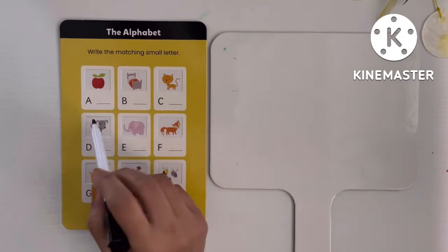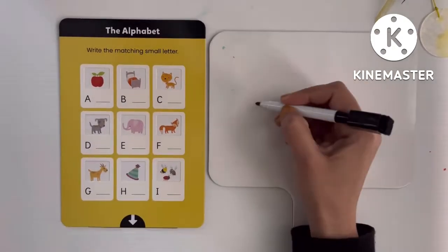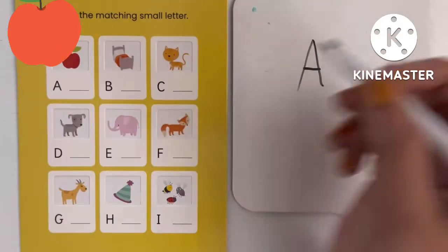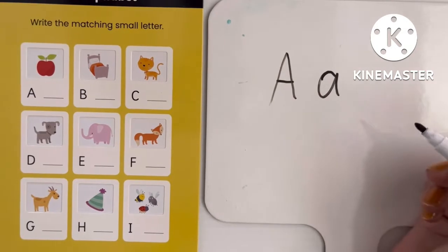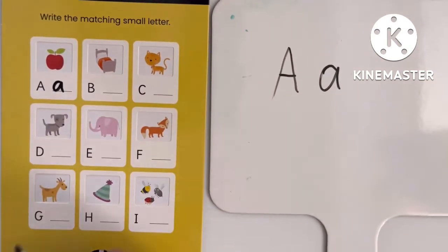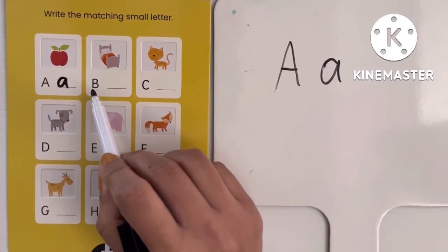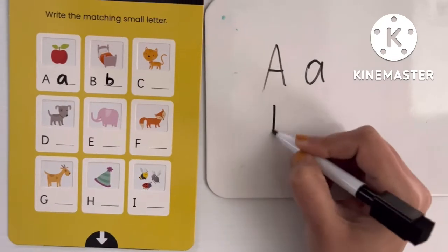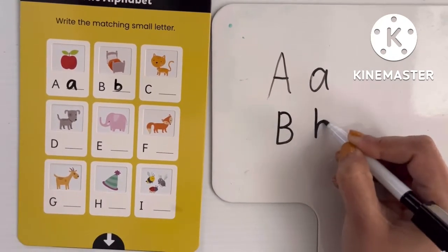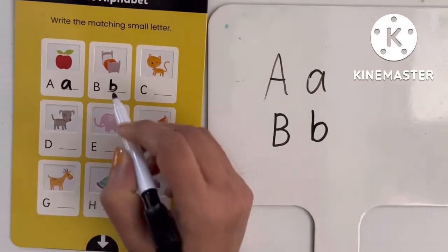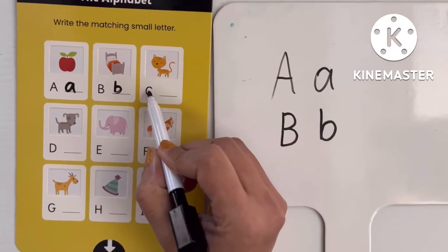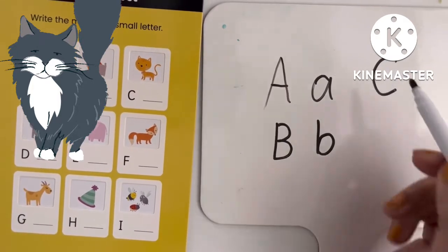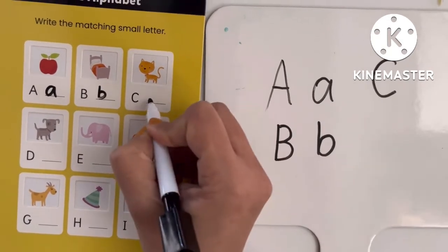Our first letter is A. This is capital A — A for apple. In lowercase it will be like this: a. Our next letter is B. In capital letter it will be like this: B. And lowercase is like this: b — b for bed. Next, C — C for cat. This is the capital letter in uppercase. In lowercase we write: c.